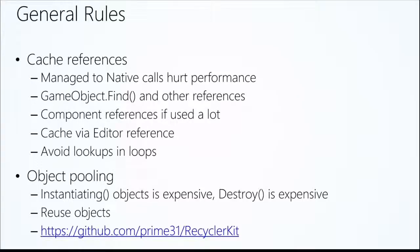When you use techniques like GameObject.Find, they scan every object in your game to find an object — they're very slow. Component references: if you're constantly saying get me my animator component and do this with it, over and over again maybe multiple times per frame, that's going to really hurt performance. You can cache these references up front — we'll see code ways of doing that, including dragging and dropping in the Unity editor.